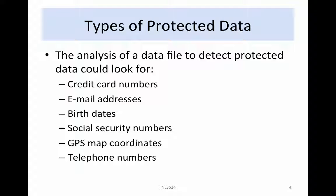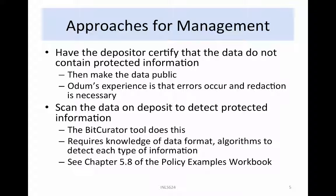The analysis of a data file to detect protected data could look for multiple types of information, and each type may require a different analysis algorithm. The analysis of protected information may require significant compute resources. Analysis algorithms exist for credit card numbers, email addresses, birth dates, social security numbers, GPS map coordinates, and telephone numbers. The ODOM Institute manages the preservation of social science surveys, which may contain protected data.